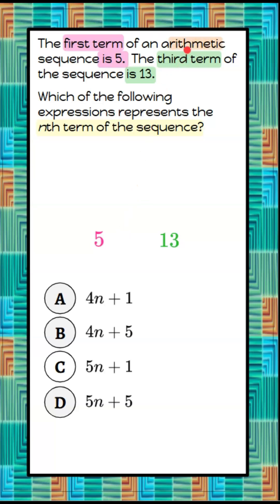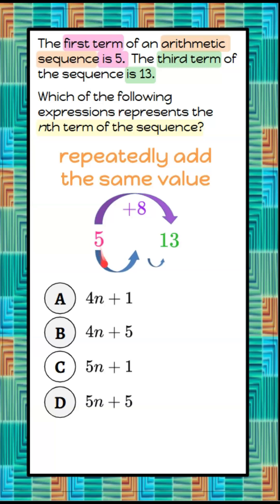However, we're told that it's an arithmetic sequence, which tells us that we're going to repeatedly add the same value from one term to get to the next. So if I look from the first to the third term, I see I have an increase of 8. 5 add 8 is 13. Half of 8 is 4. So if I say 5 add 4 will give me 9, add 4 gives me 13.